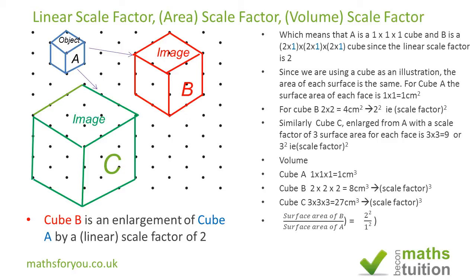So what you do is to find the linear scale factor given the area of each surface, you do the area of the image divided by the area of the object and then take the square root. So in this case, the square root of 4 is 2, so the linear scale factor is 2.